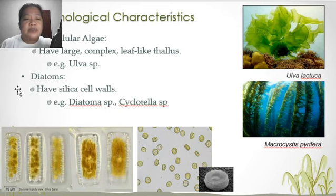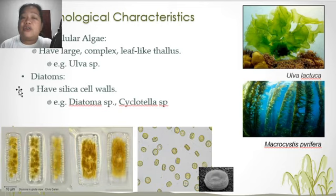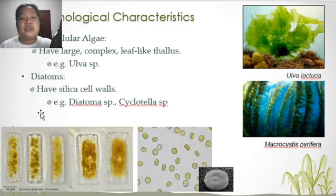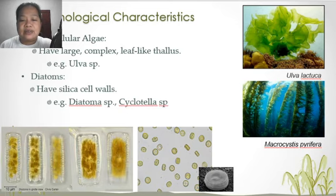Next we have the diatoms. These are unicellular algae but covered with silica on the cell wall. One good example is Diatoma and Cyclotella species — this is the Cyclotella species and this is the Diatoma species.